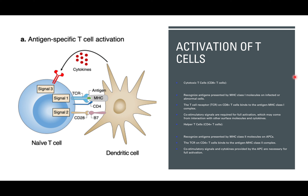Now we're going to have the activation of a T cell. Let's say a dendritic cell did some phagocytosis and it has its MHC class 2 complex being presented. Firstly, we're going to have a naive T cell — a T cell that is not completely matured — binding to its T cell receptor on CD8+, binding to the MHC complex, and setting up a trigger of signals required for the full activation of the T cell.